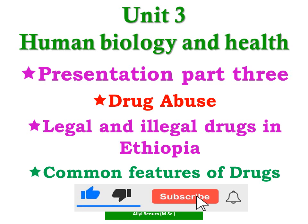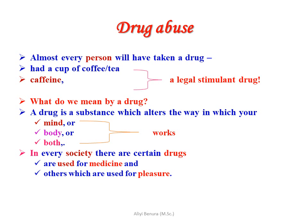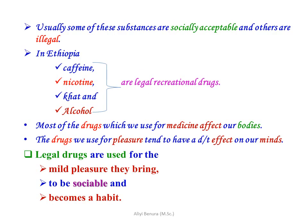Let us start our slide on drug abuse. Almost every person will have taken a drug — for example, a cup of coffee or tea. Caffeine from coffee is a stimulant drug. A drug is a substance which alters the way in which your mind and body works. In every society, some drugs are used as medicine and others for pleasure. In Ethiopia, caffeine, nicotine, chat, and alcohol are legal recreational drugs.